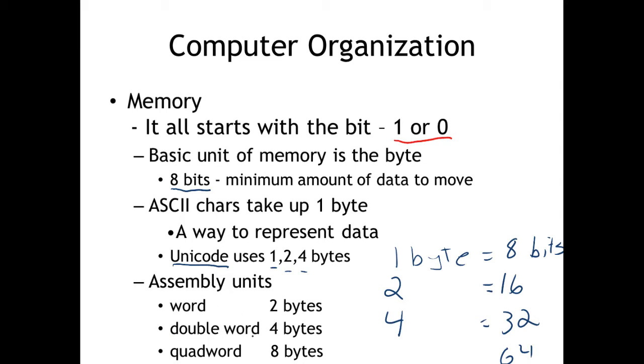You can almost think of word and double word like variable types — like saying int — where we're simply defining the number of bits that are available: a byte being 1 byte, a word being 2 bytes, a double word being 4 bytes.